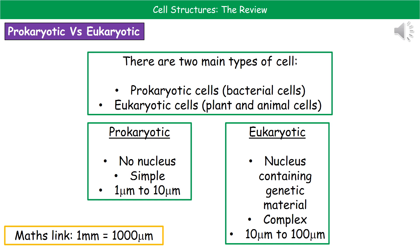One of the kinds of questions they could ask you about on the exam is to compare the differences between prokaryotic and eukaryotic cells. The first difference is that in a prokaryotic cell there is no nucleus — the DNA is just free-floating — whereas in a eukaryotic cell we have the nucleus that contains the genetic material.